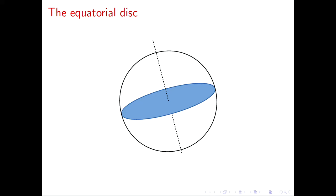The simplest example of a free boundary minimal surface in the ball is the intersection of a plane with the ball — a plane passing through the origin — which defines a free boundary minimal disk. There are many of them; we can identify them by isometries, by rotations. Here, gamma will denote the genus of the surface and R the number of boundary components. So the disk has genus zero and one boundary component.